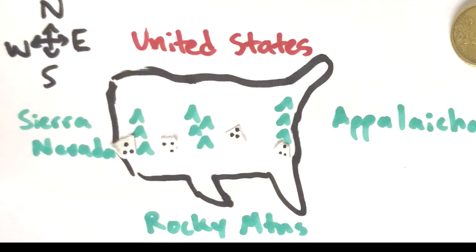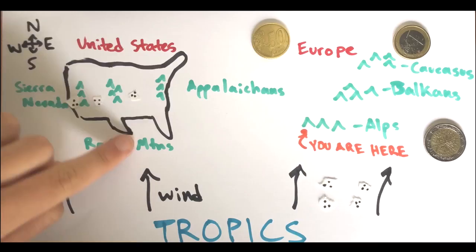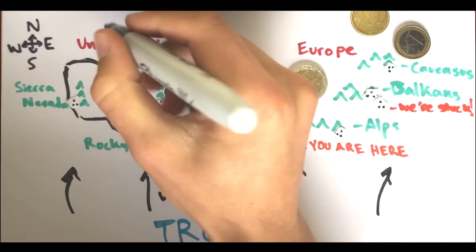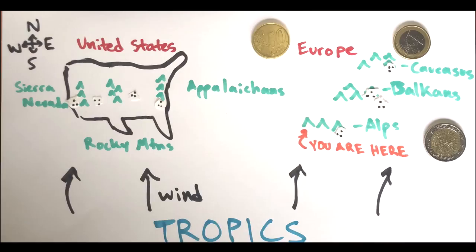Here I spelled Appalachian wrong. That's pretty cool. And I wasn't able to draw Europe, so I just put some coins there instead. That represents Europe.